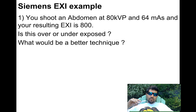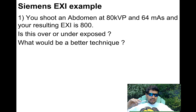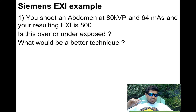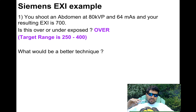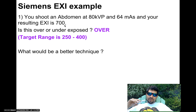A math problem you could get with this exposure indicator: you shoot an abdomen at 80 kVp and 64 mAs. Your resulting EXI is a value of 800. Is this over or underexposed? Well, our range is 250 to 400, and it's directly proportional — if the dose is big, the number is big. So at 800, I'm over range. I'm overexposed.